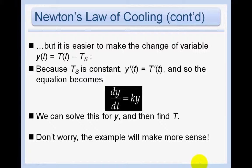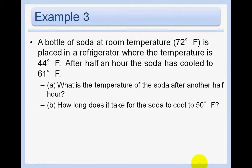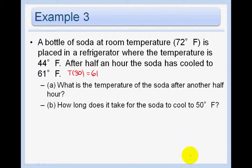We can solve for y and then find T, just like we've done before. Example: A bottle of soda at room temperature, 72°F, is placed in a refrigerator where the temperature is 44°F. After 30 minutes, the soda has cooled to 61°F.